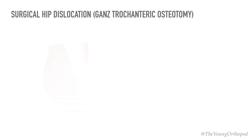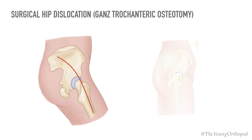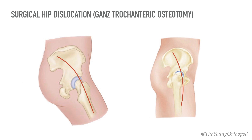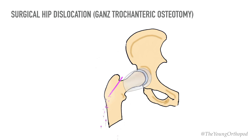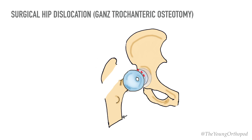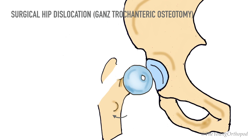The hip joint is approached via the Kocher-Langenbeck approach or Gibson's approach, and a trochanteric flip osteotomy is performed. The gluteus minimus muscle is dissected carefully and a Z-capsulotomy is performed before dislocating the hip joint. The acetabular labrum and adjacent articular cartilage are assessed, and identified lesions are tested for partial or complete avulsions from the acetabular rim. This procedure allows excellent exposure of the proximal femur and acetabulum.